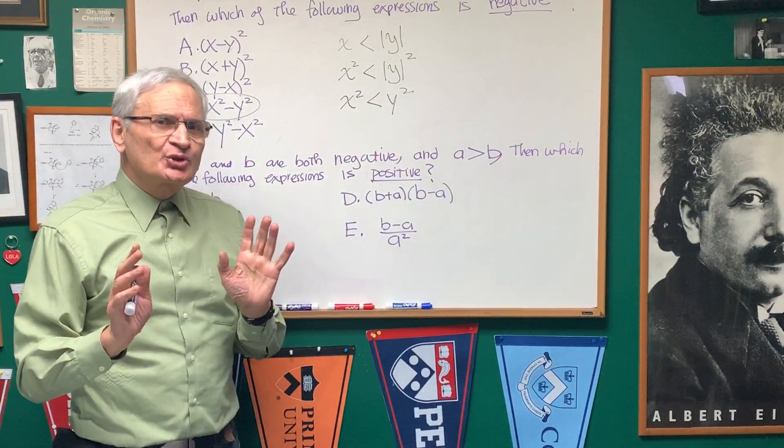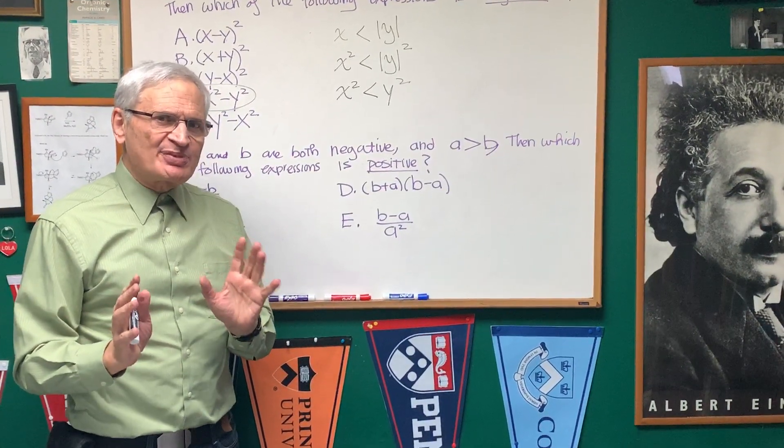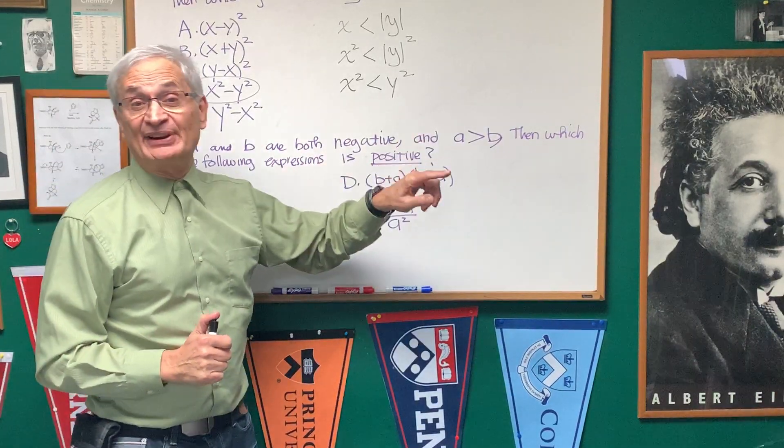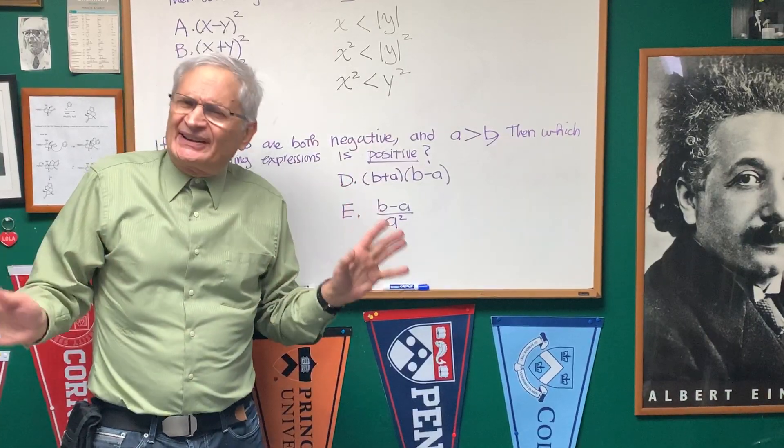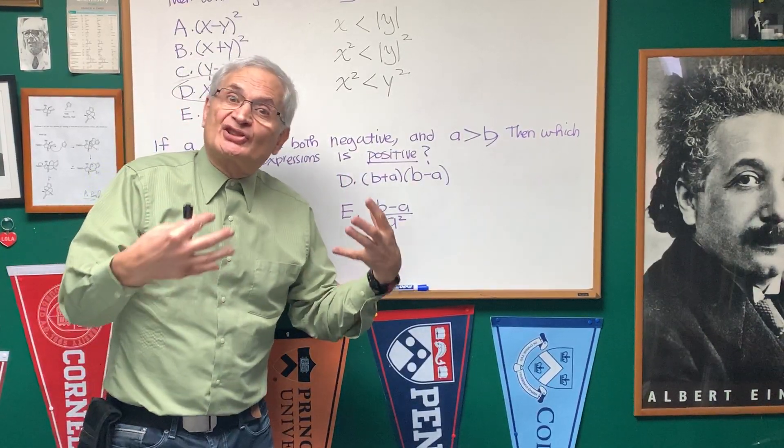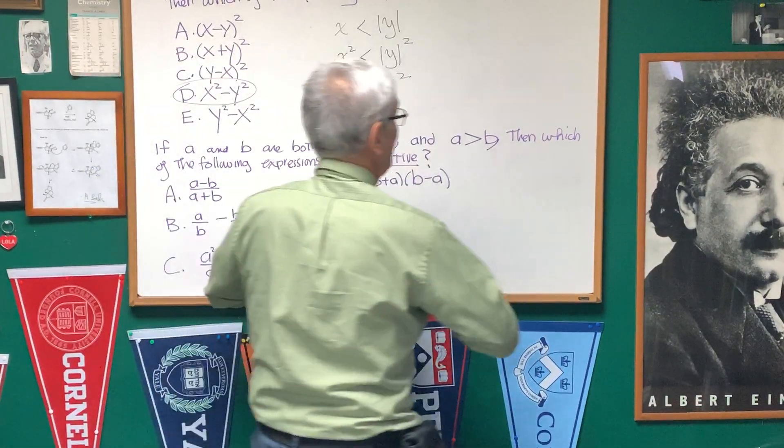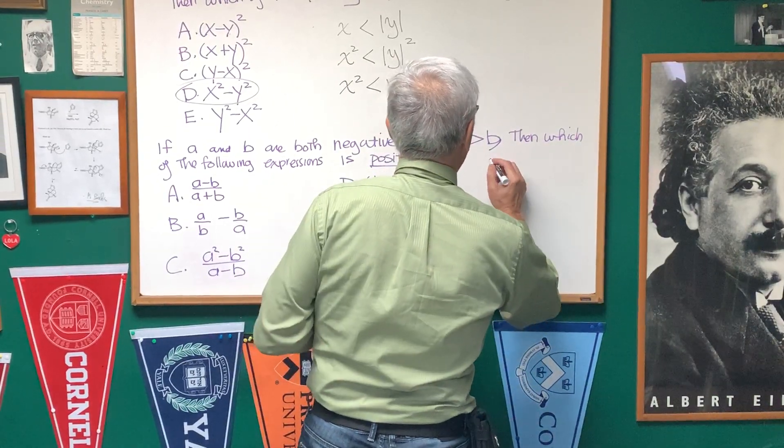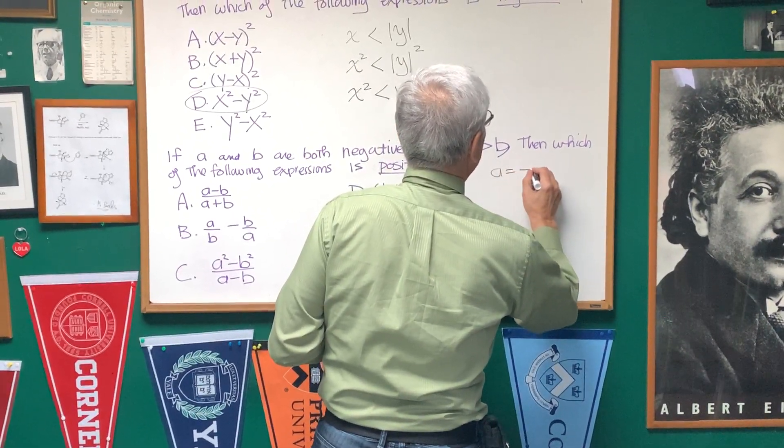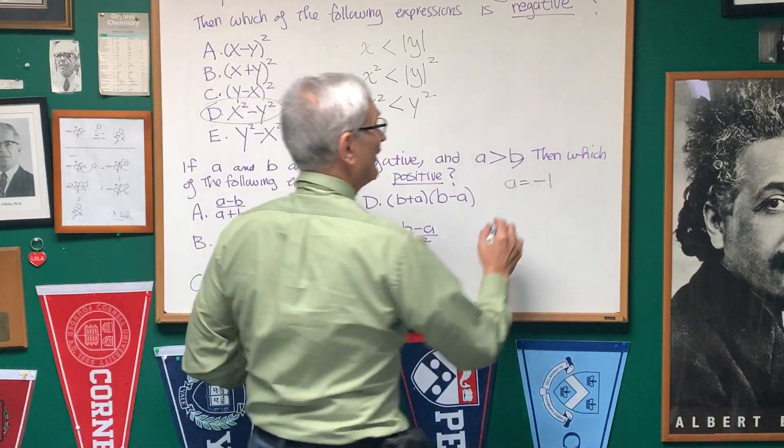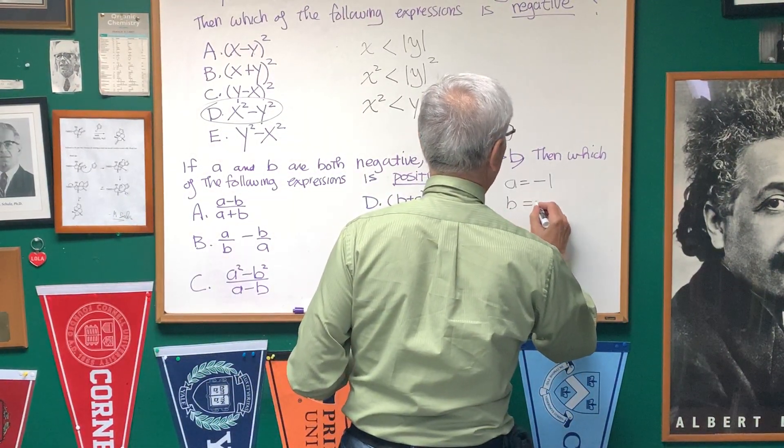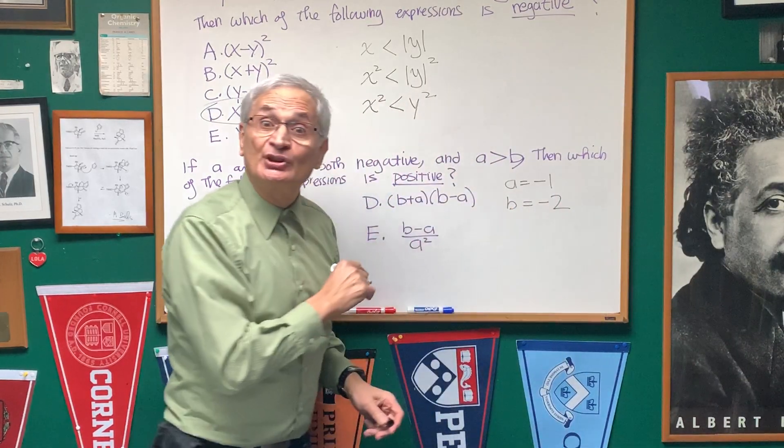Now, the trick to this problem, what makes this problem so tricky, is that both A and B are negative. And when it says A is larger than B, that can be confusing, so I suggest a good way to do this is to assign a value. How about we say A is equal to negative 1? And if that's larger than B, then let's choose a smaller value for B, negative 2.